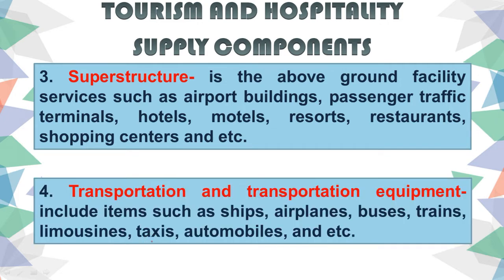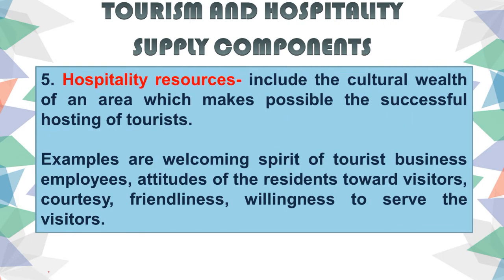Number four is transportation and transportation equipment. This includes all transportation services needed to access natural resources, infrastructure, and superstructure — such as ships, airplanes, buses, trains, limousines, taxis, and automobiles, among others. Those are the four main supply components of tourism and hospitality. The fifth one is hospitality resources.